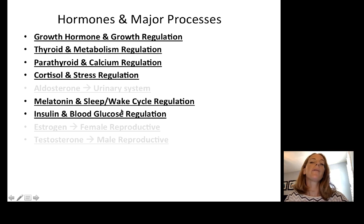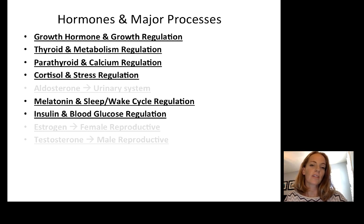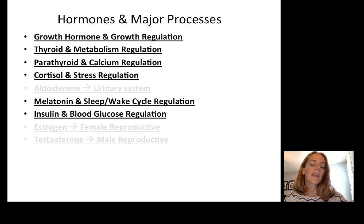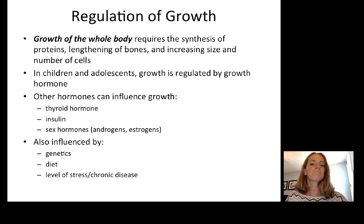Through that, we will go through several major processes today: growth regulation through growth hormone, metabolism regulation through the thyroid, calcium regulation through the parathyroid, stress regulation through cortisol, sleep-wake cycle regulation through melatonin, and blood glucose regulation through insulin. Other hormones like aldosterone, estrogen, and testosterone we'll introduce but cover in detail when we talk about the urinary and reproductive systems next unit.